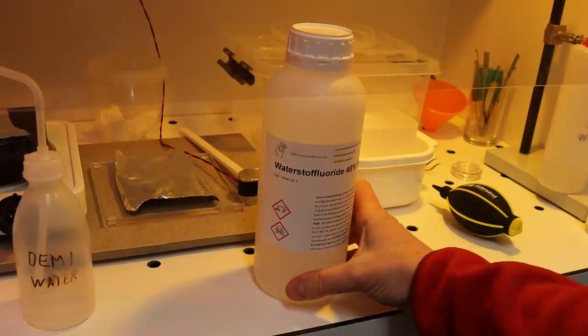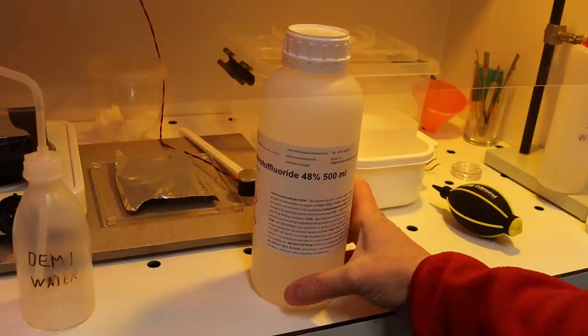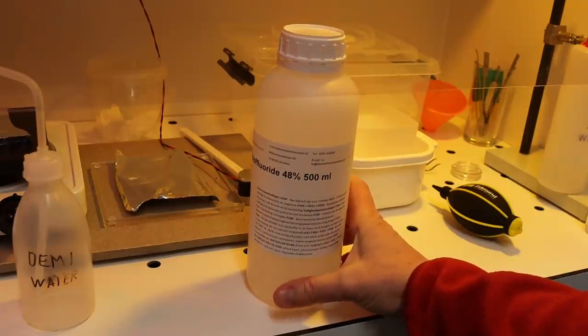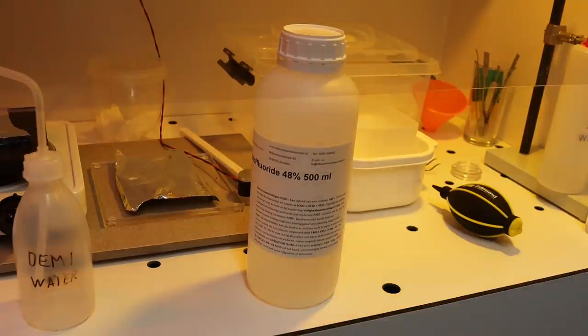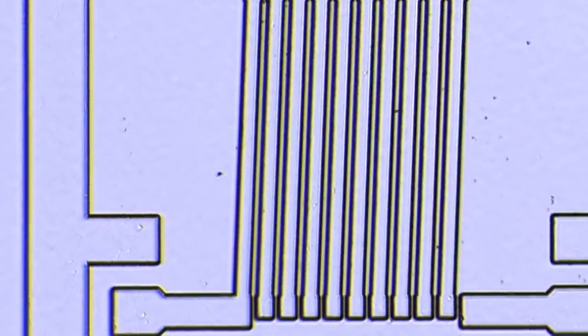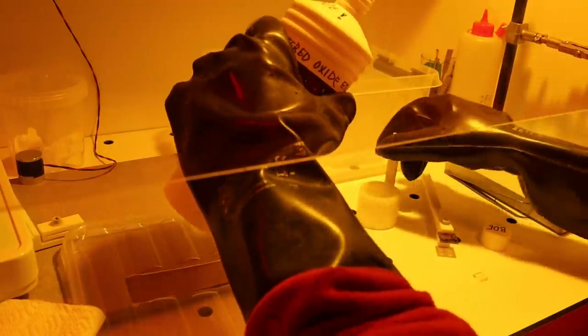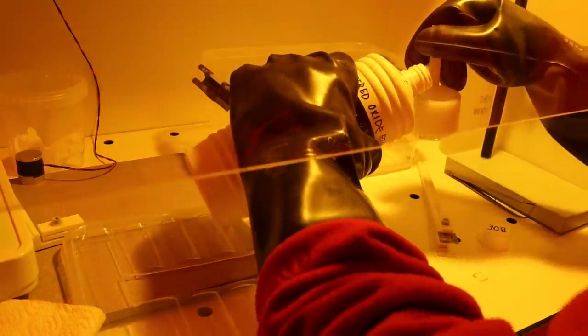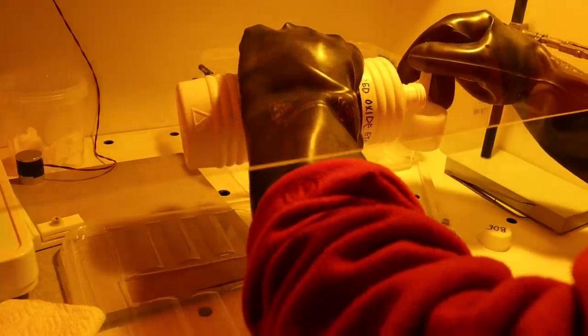Now whenever the name hydrofluoric acid or HF comes up, it leads to discussion about safety, and for good reasons actually. But despite the dangers, it is still frequently used, because when you want to do cheap and fast etching of glass, there really are no good alternatives. In my opinion, you can work with basically any hazardous substance as long as you take the right precautions.